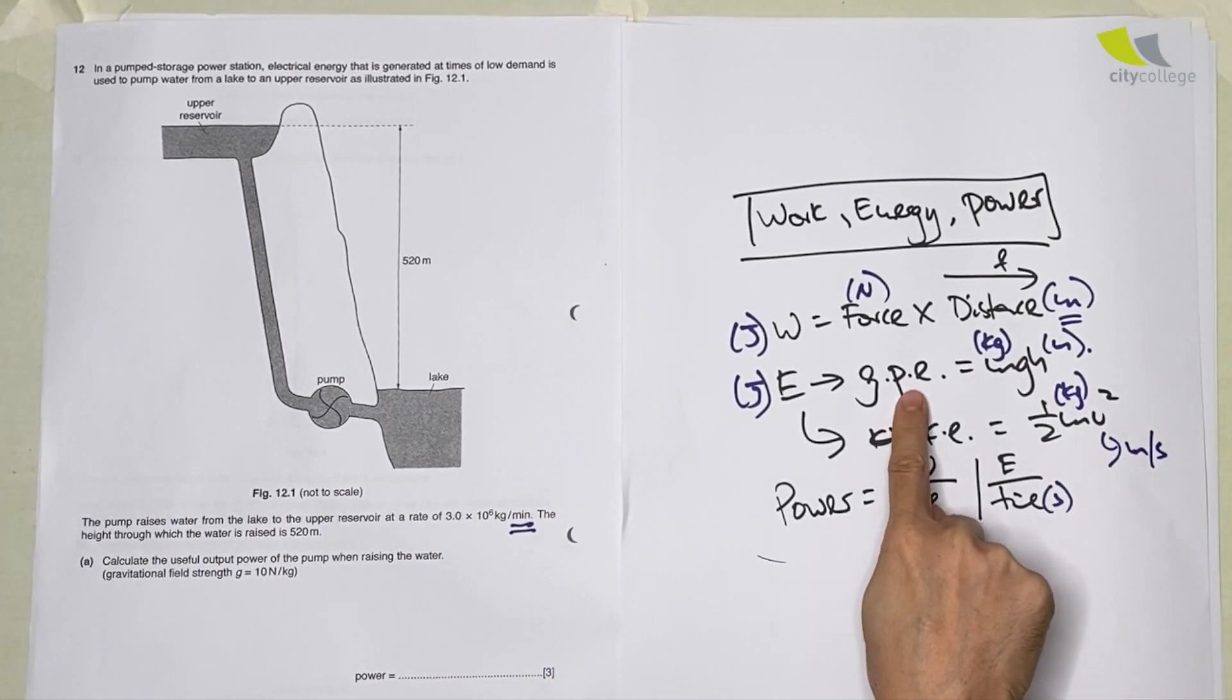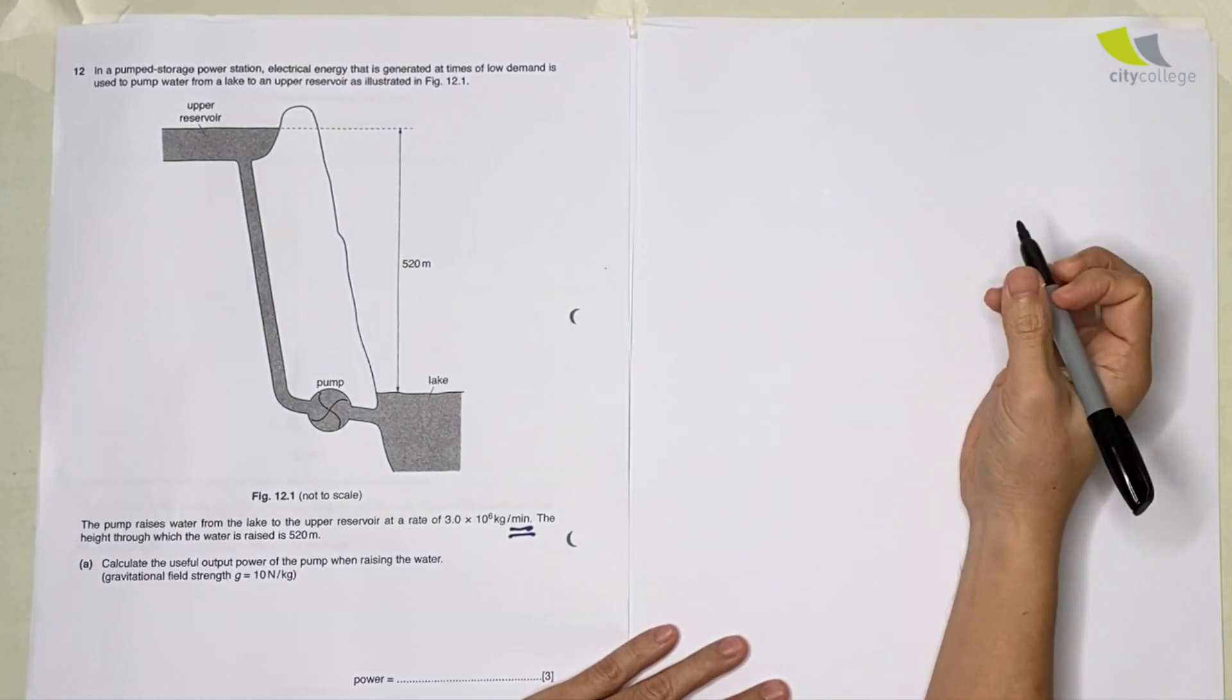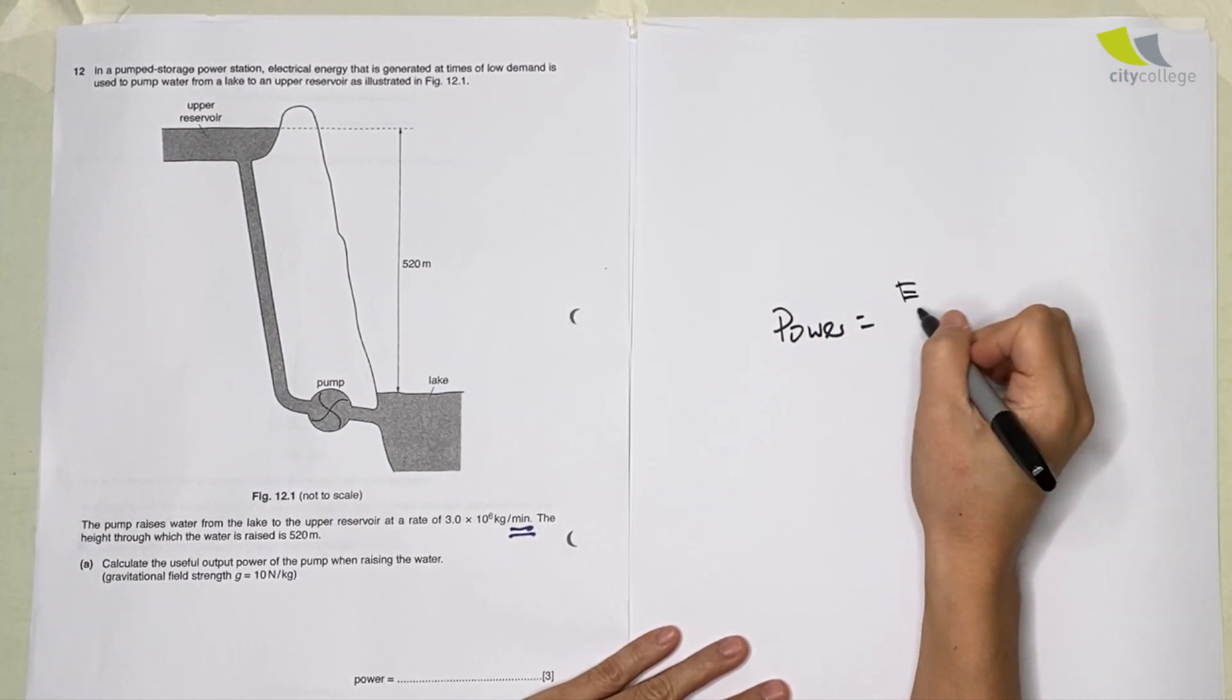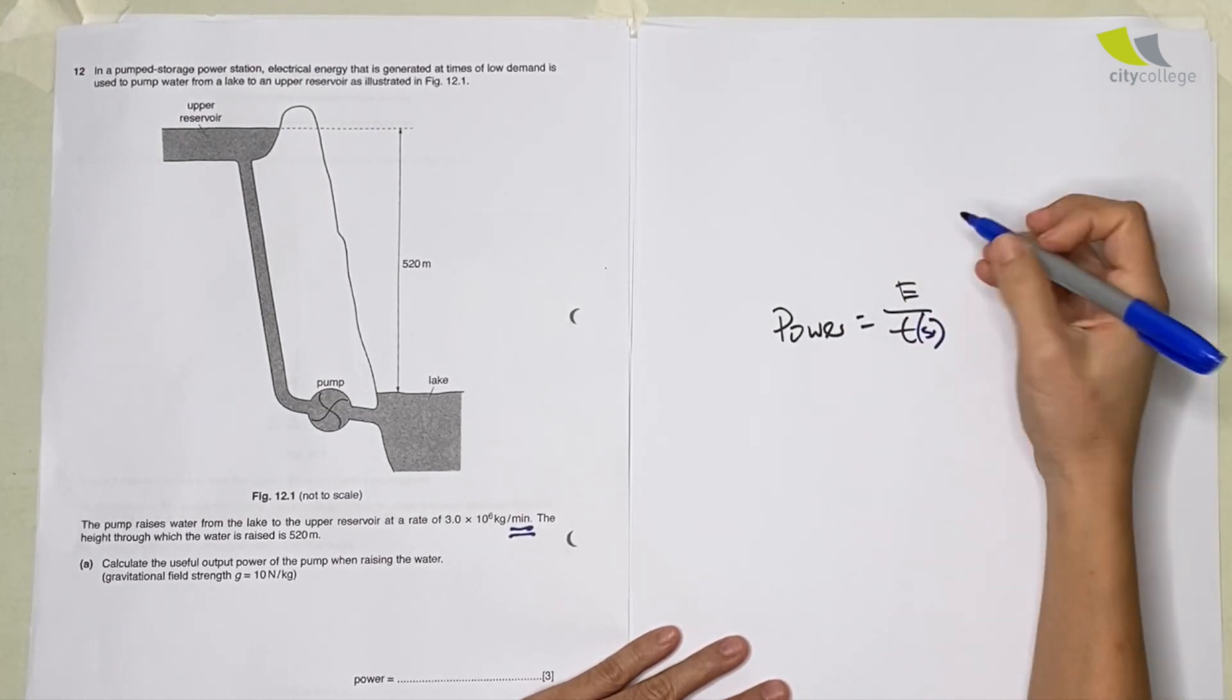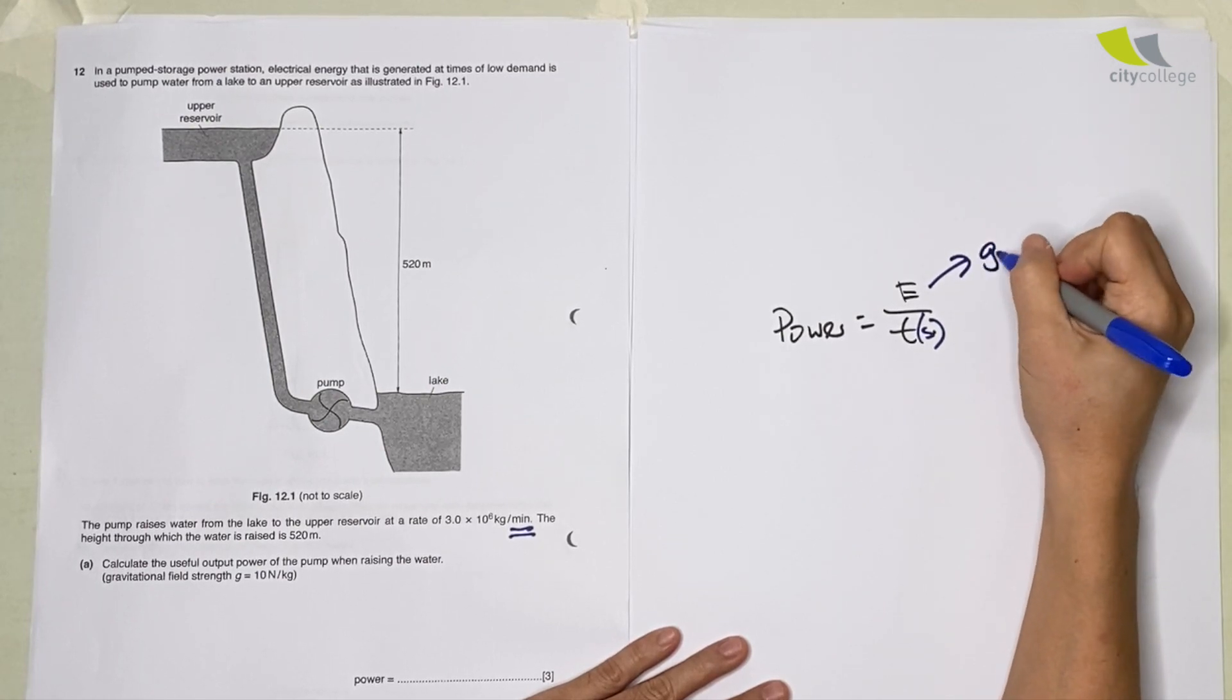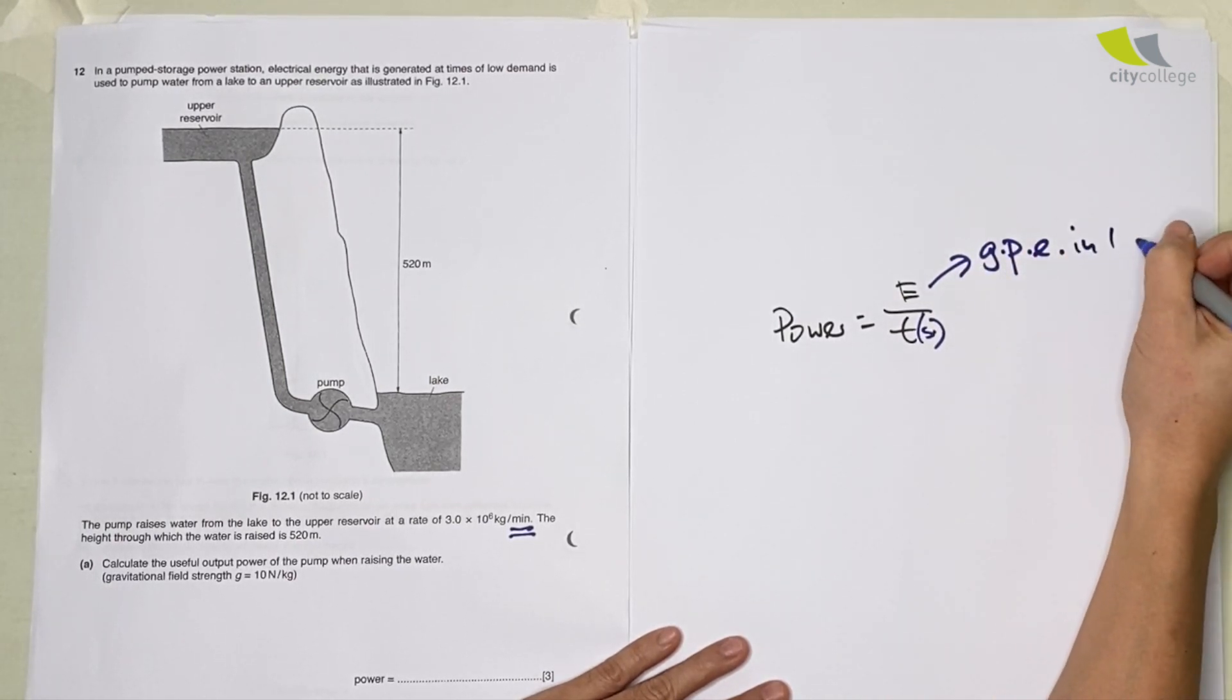So over here, raising it, the formulas that are involved are your gravitational potential energy and then later on your power. To solve for power, however, we need to know what is the energy per unit time, which must be in seconds. To solve for our energy, we need to calculate GPE in one second.